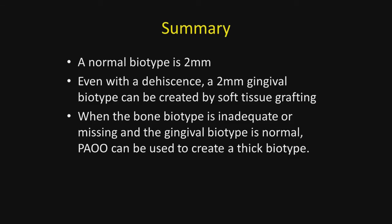Summary. A normal biotype is two millimeters. Even with a dehiscence, a two millimeter gingival biotype can be created by soft tissue grafting. When the bone type is inadequate or missing and the gingival biotype is normal, localized PAOO can be used to create a thick biotype. It is my hope that this short video on a classification of biotype will increase our understanding of what we're trying to accomplish with soft tissue grafting and creating bone over dehiscences, so that cases will be more stable and less susceptible to recession in the future.